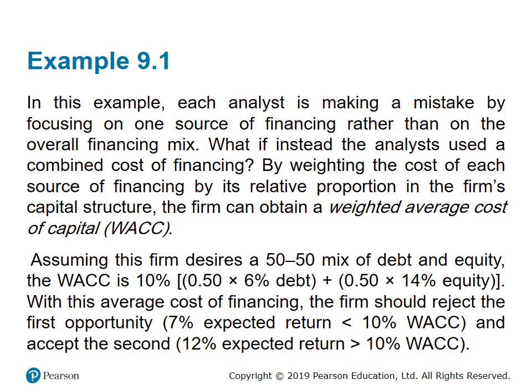Using this weighted average cost, the firm should reject Investment A, which returns only 7%, because it falls below the 10% WACC. The firm should accept Investment B, which returns 12%, because it exceeds the cost of capital of 10%.